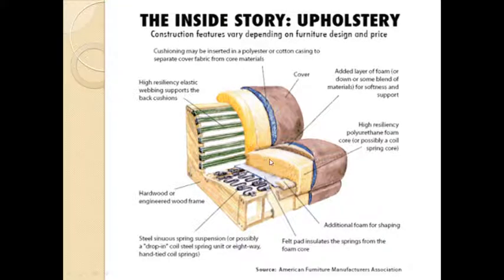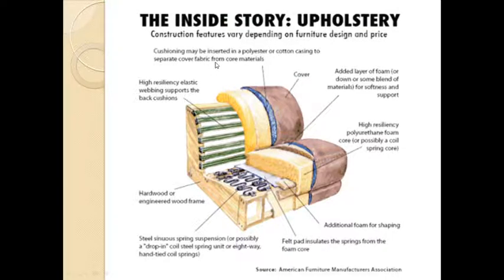You can see high resiliency elastic wrapping which supports the back cushion. The back cushion may be made up of a hard core covered with soft foam or soft polyester material. Further, the cushion may be inserted in a polyester or cotton casing to separate the cover fabric from the core material. The blue layer you can see is an additional cover which separates the foam, and finally there is the outer decorative fabric to give aesthetic appeal.